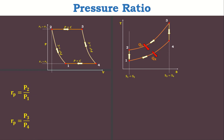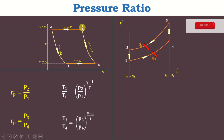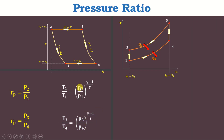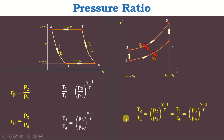From the isentropic relation during compression process, T2 divided by T1 equals (P2/P1) raised to the power (gamma minus 1) divided by gamma. Similarly, for the isentropic expansion process, T3 divided by T4 equals (P3/P4) raised to the power (gamma minus 1) divided by gamma. Since P2/P1 equals P3/P4, all ratios become equal: T2/T1 = (P2/P1)^((γ-1)/γ) = T3/T4 = (P3/P4)^((γ-1)/γ).